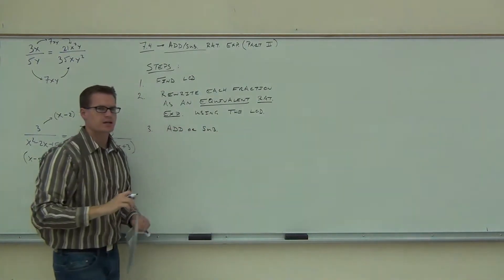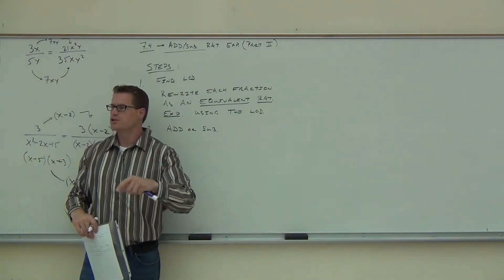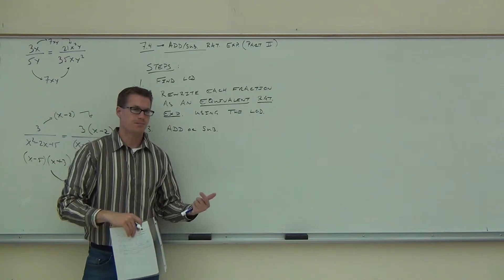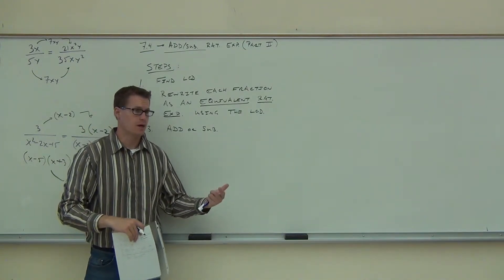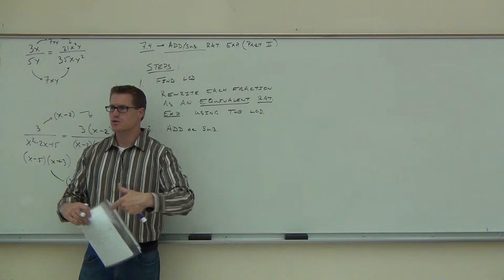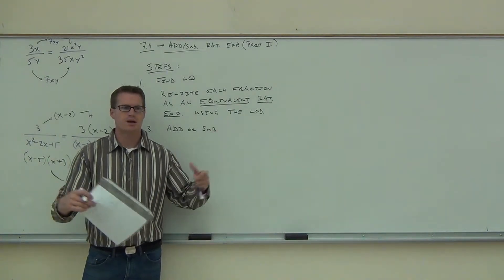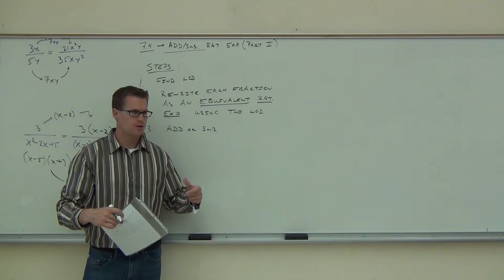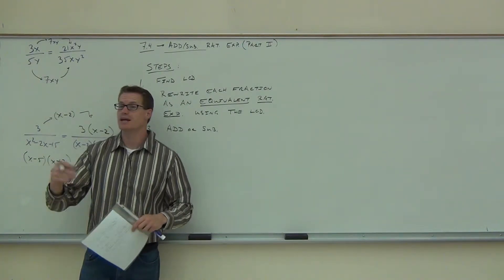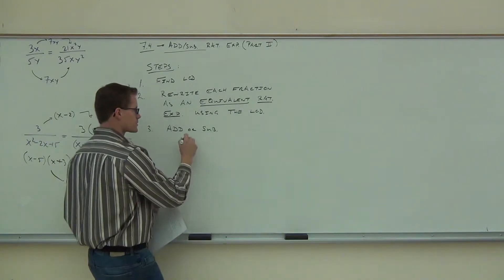So add or subtract. One thing I want to make a note of: don't distribute your denominators — you never do that. Because you're going to try to simplify later, which means you're going to factor the numerators. Yes, we will be distributing those because you need to combine like terms, but on the denominators you're not going to distribute. You're going to wait until the very end and try to factor and simplify. So don't distribute denominators.